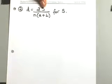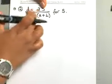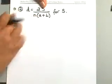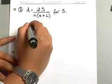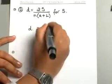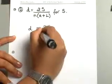You have D equals 2S over N times the quantity A plus L, and you want to solve this for S. So again, you're solving for S, and you want to get rid of everything else and move it to the other side. So just like we did earlier, we'll start out by getting rid of our denominator first.